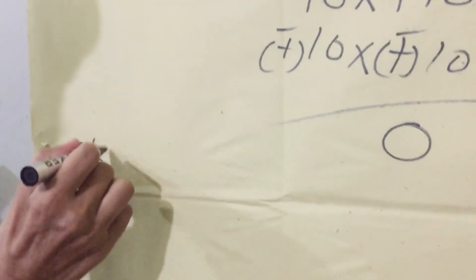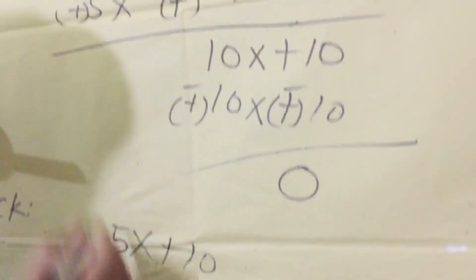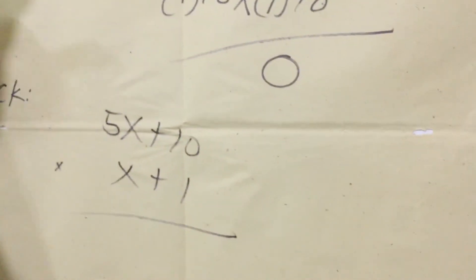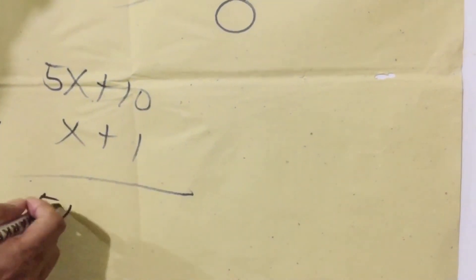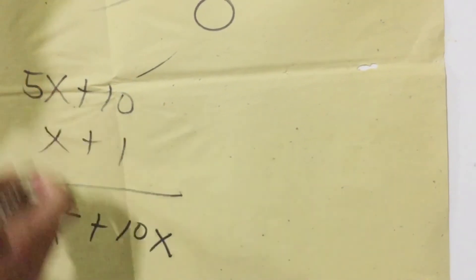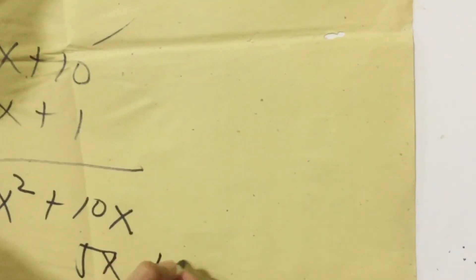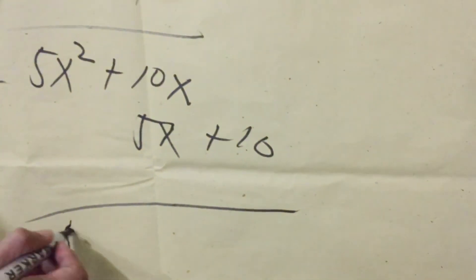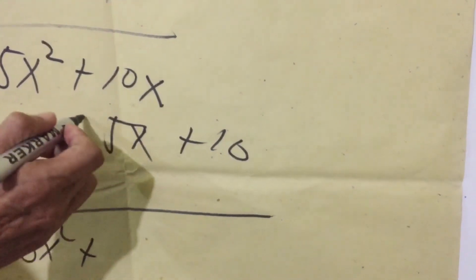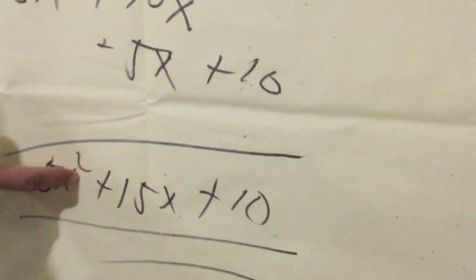Now we are going to check. Quotient: we have five x plus ten, times x plus one — the divisor binomial. Starting from the left: five x times x equals five x squared. Then ten times x equals positive ten x. Then moving to the second term on the left: one times five x equals five x. Then one times ten equals positive ten. We are going to add: we have five x squared, plus fifteen x, plus ten — which is equal to the original given expression.